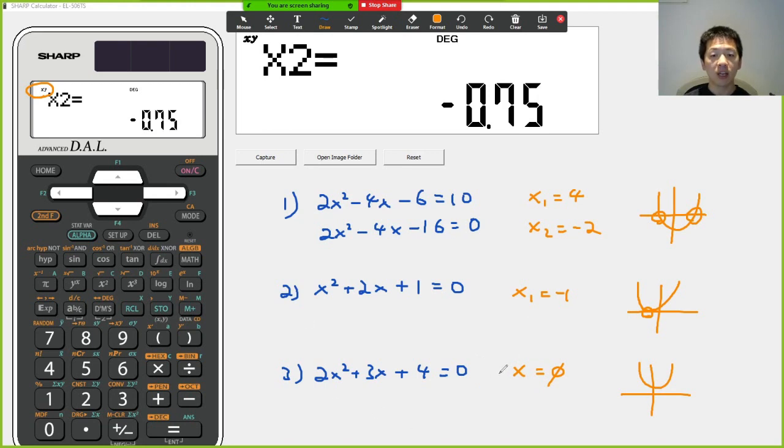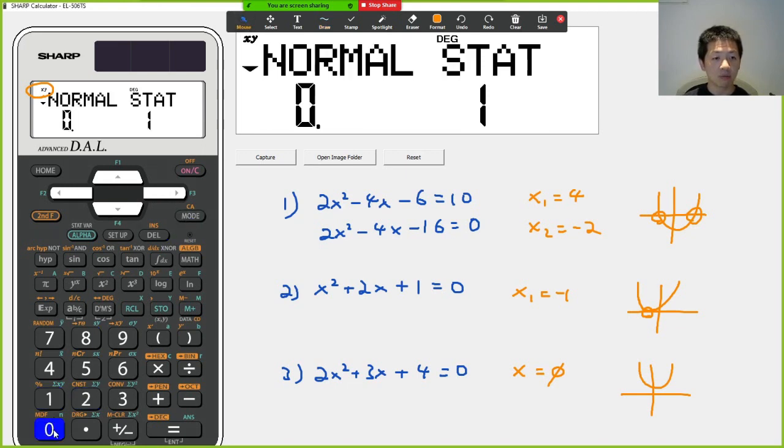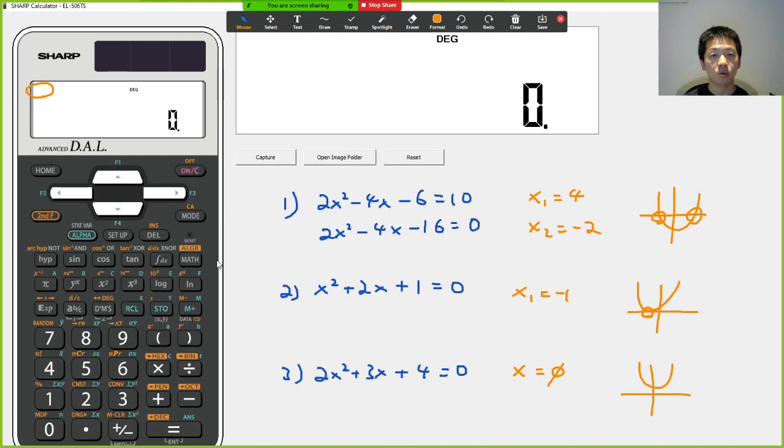So this is how I solve quadratic equation using the scientific calculator. If I want to go back to just normal mode, I just need to press mode and press zero, and then this will get back to normal.